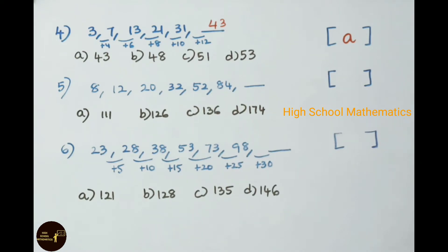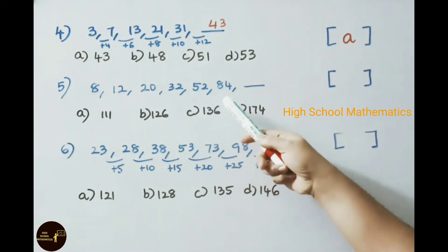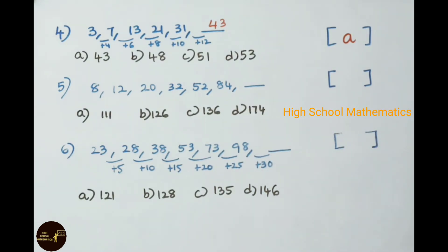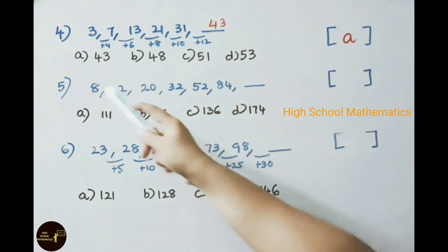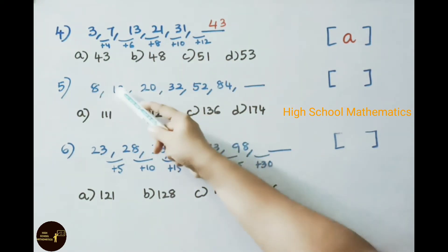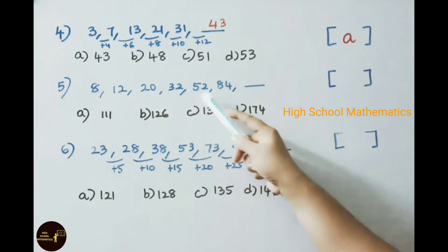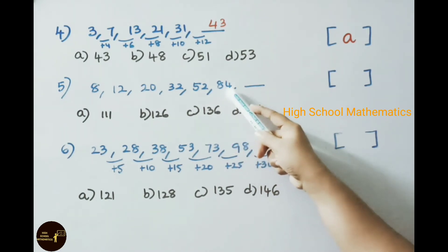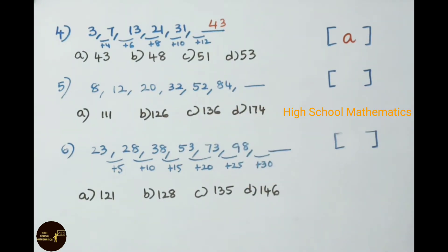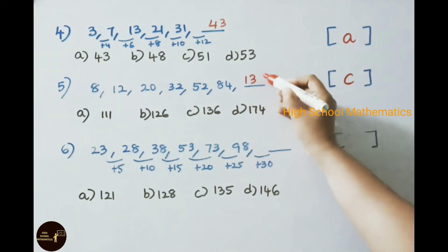Fifth practice problem: 8, 12, 20, 32, 52, 84 — find the next term. If you observe this pattern, it is a Fibonacci series: 8 plus 12 is 20, 12 plus 20 is 32, 20 plus 32 is 52, 32 plus 52 is 84, and 52 plus 84 is 136. The answer is option C, 136.